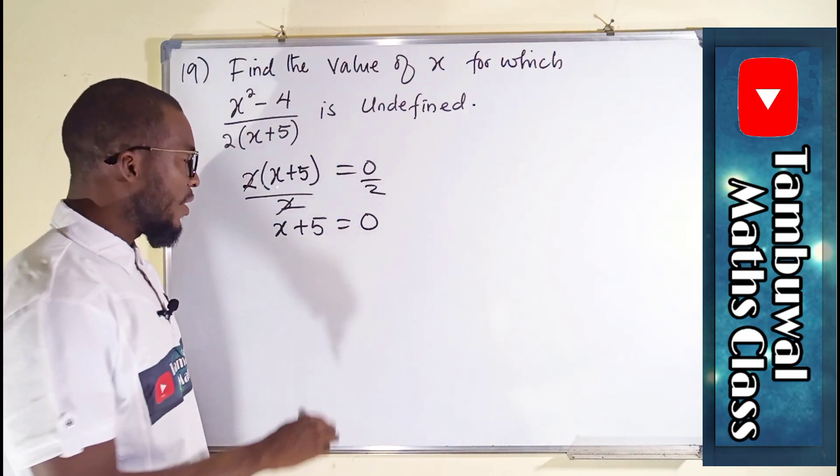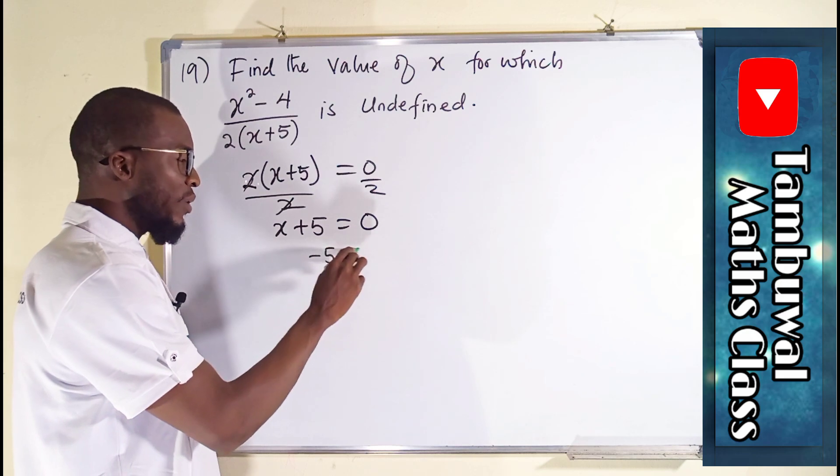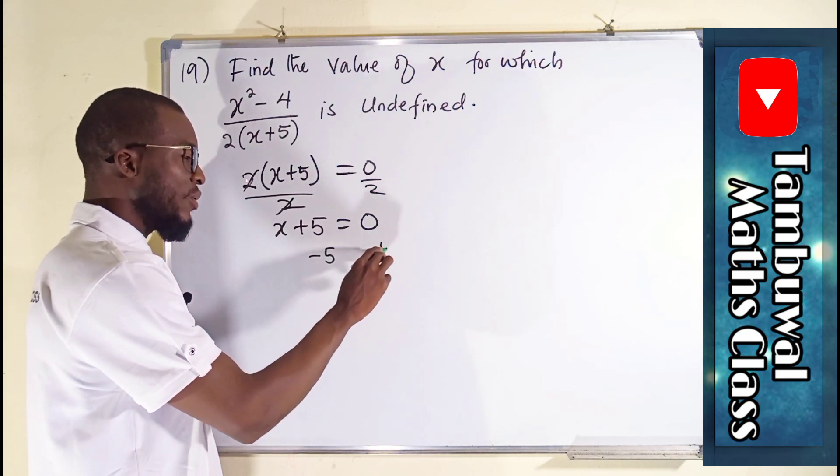We are looking for x so we can subtract 5 from both sides. Whatever you do to one side, you have to do it to the other side.